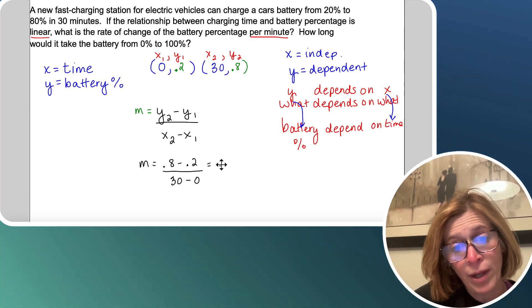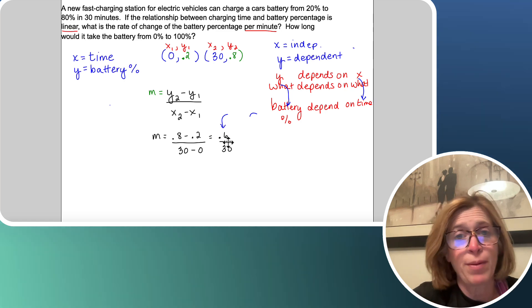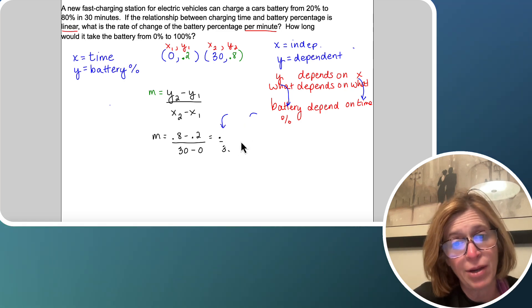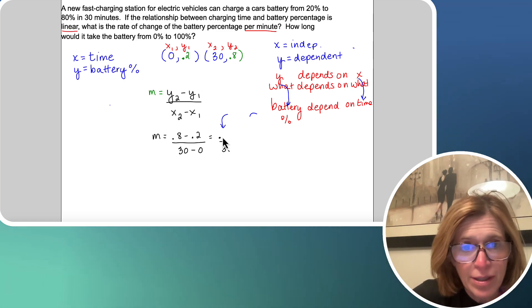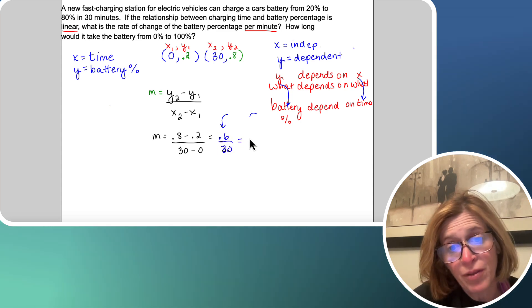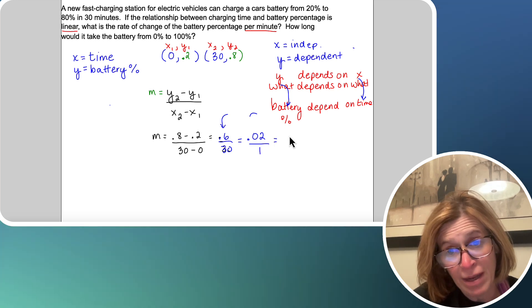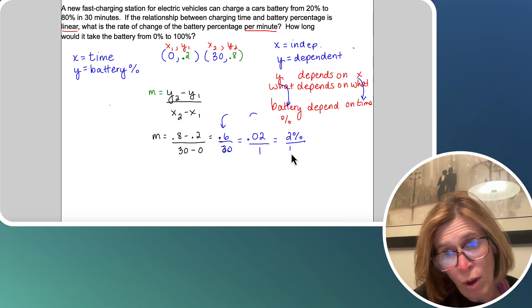So M equals 0.8 minus 0.2 all over 30 minus 0. That's going to give me 0.6 over 30. So now I'm going to simplify 0.6 over 30, because remember it's a rate of change, so I need a denominator of 1. So 0.6 over 30, which is going to simplify to 0.02 over 1.